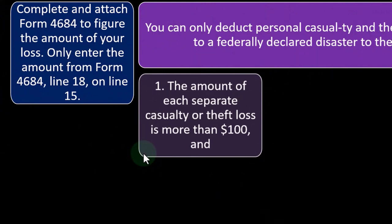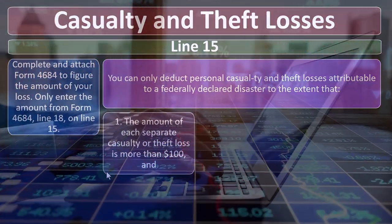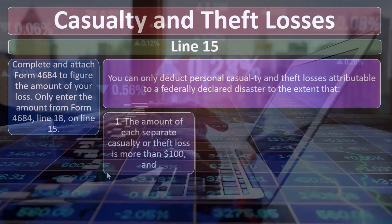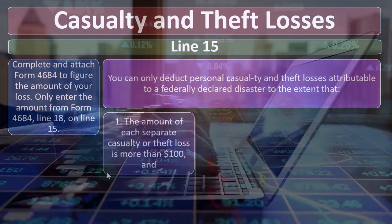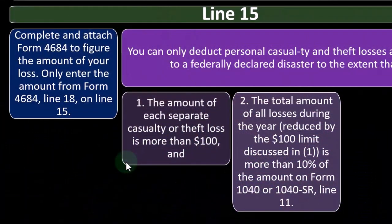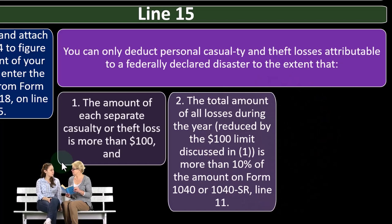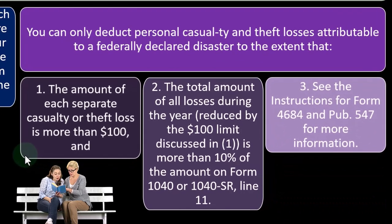Some things in the tax code have a number put in that, if not changed over time, just sits there and after a while looks kind of ridiculous because it hasn't been adjusted for inflation — but they haven't removed it either. So we've got that $100 threshold, and two, the total amount of all losses during the year reduced by the $100 limit must be more than 10% of the amount on Form 1040 line 11, which is the AGI. See the instructions for Form 4684 and Publication 547 for more information.